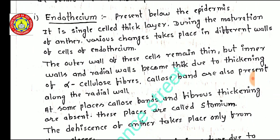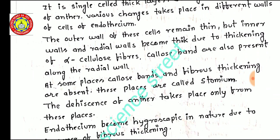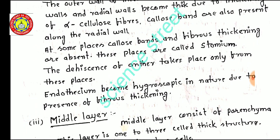Callose bands are also present along the radial wall. At some places, callose bands and fiber thickening are absent. These places are called stomium. Through the stomium, the microsporangium dehisces and pollen grains come out from the pollen sac. Dehiscence of the anther takes place only from these places.